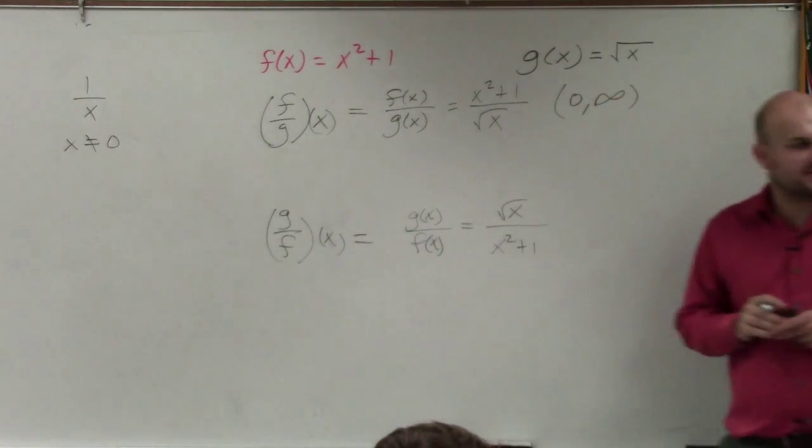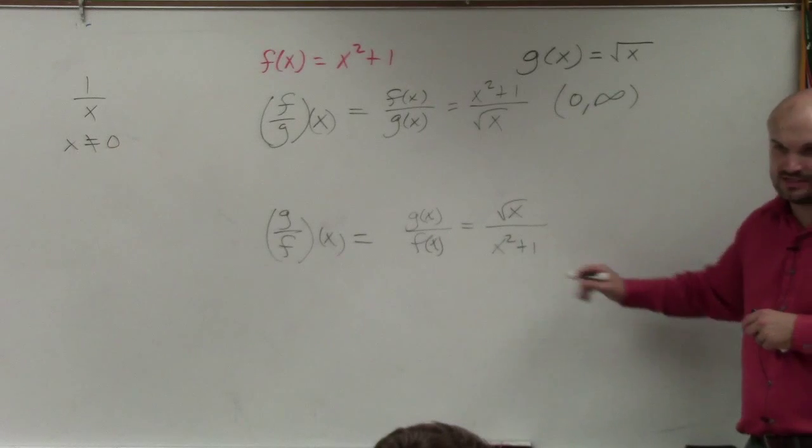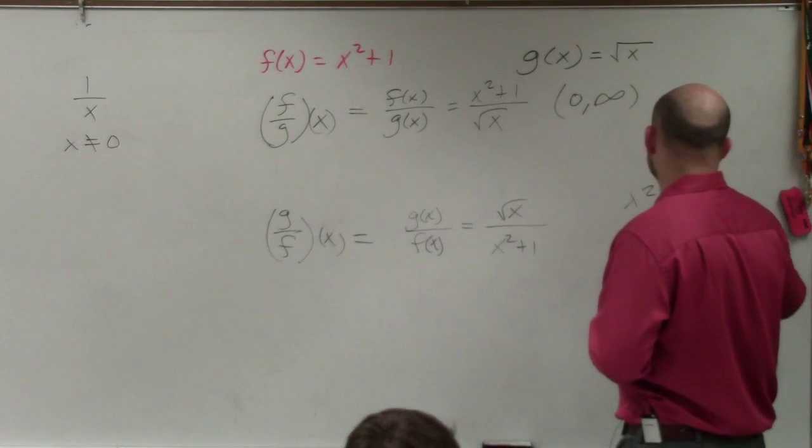Now, typically when you guys are dealing with a rational, you take whatever is in your denominator and set it equal to 0. So I'd say x squared plus 1 equals 0.